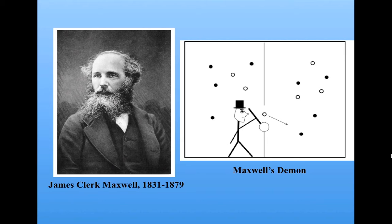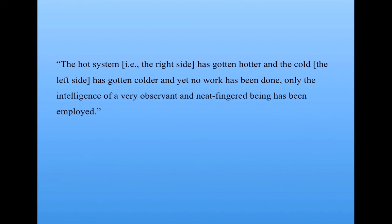The demon does open and close the door, which takes work. But Maxwell was able to argue that the door could be cleverly set up so that opening and closing it would require very little work compared with the amount that entropy goes down as a result. In fact, in the years since Maxwell proposed this paradox, some feasible designs for such a door have been proposed. Maxwell's paradox is that no other work has been done. In his own words: the hot system, that is the right side, has gotten hotter, and the cold, that is the left side, has gotten colder, and yet no work has been done. Only the intelligence of a very observant and neat-fingered being has been employed.